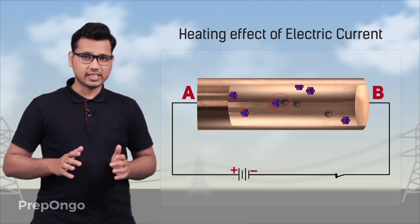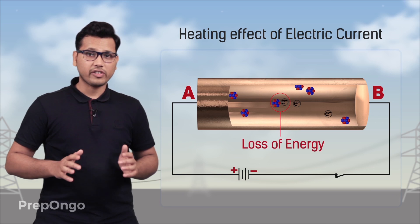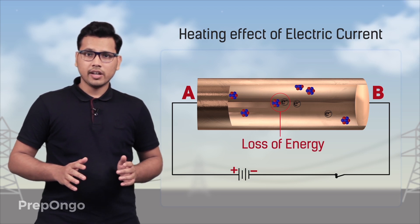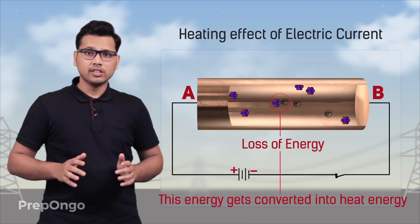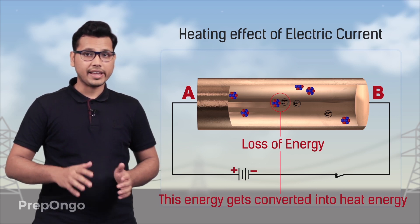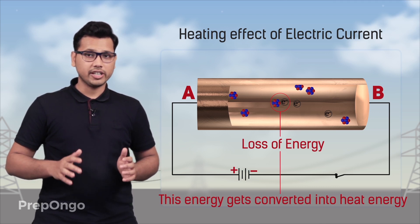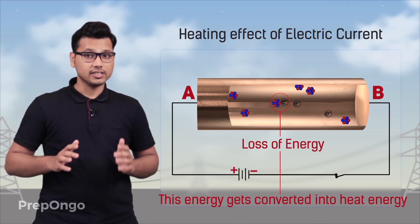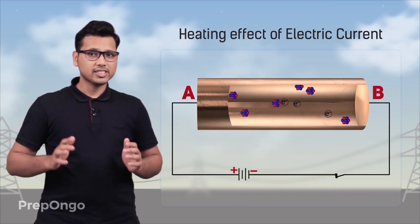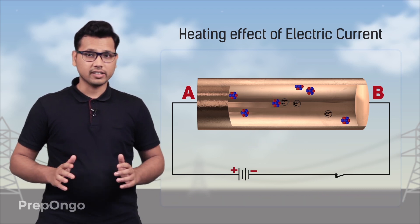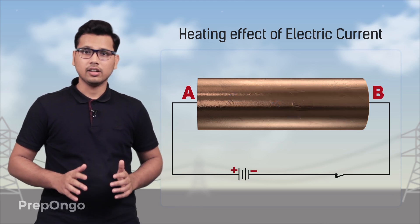Now in overcoming this resistance, or in these collisions, a loss of energy takes place. This energy gets converted into heat energy. So we can say that after applying the battery, the electrical energy gets converted into heat energy and thus heating of the conductor takes place. Now let us find out on what factors does this heat generated in the conductor depend.